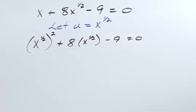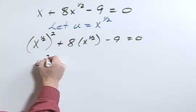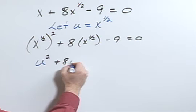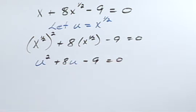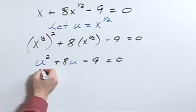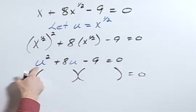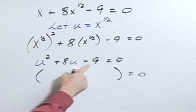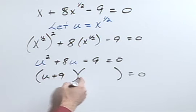And then doing my substitution, it would be u squared plus 8u minus 9 equals 0. Now we have something that we can factor. So u squared plus 8u minus 9 becomes u plus 9 times u minus 1.